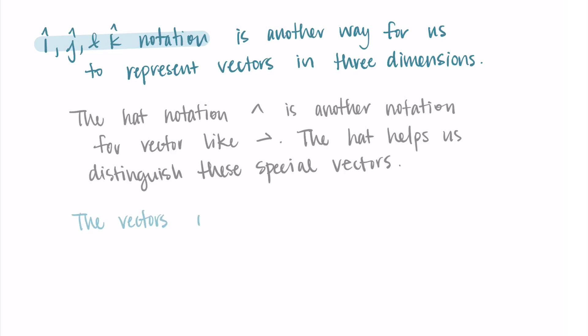So the way we state this formally is that the vectors i hat, j hat, and k hat together form a standard basis for R3. So that word standard basis comes up in other situations in math, but you should just think of it as sort of our building blocks for R3.